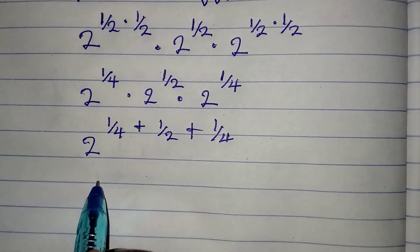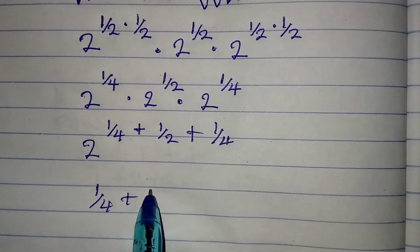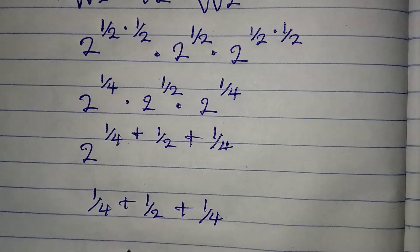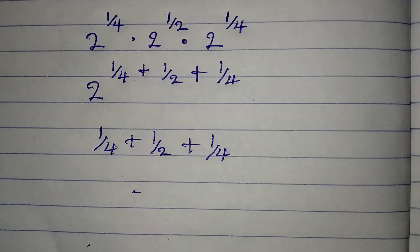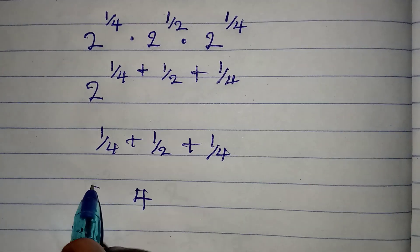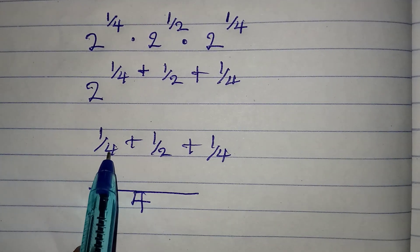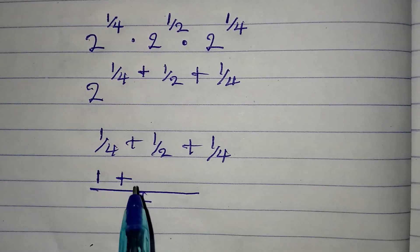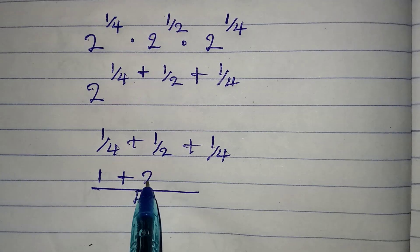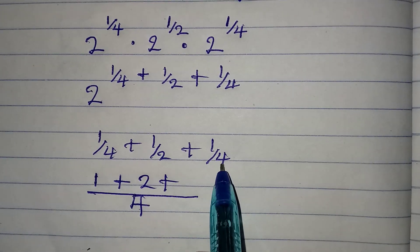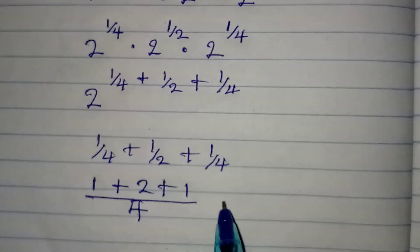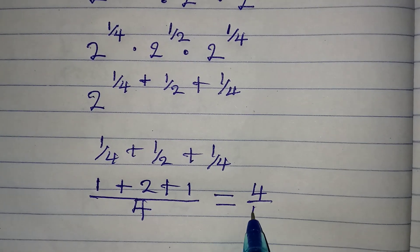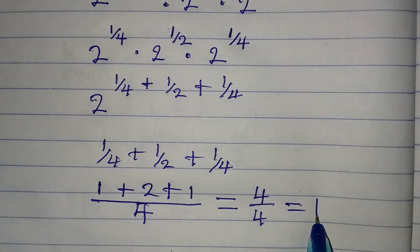The power is 1/4 plus 1/2 plus 1/4. The LCM is 4. So: 4 divided by 4 is 1, times 1 is 1; plus 4 divided by 2 is 2, times 1 is 2; plus 4 divided by 4 is 1, times 1 is 1. At the end of the day I have 4 over 4, which equals 1.